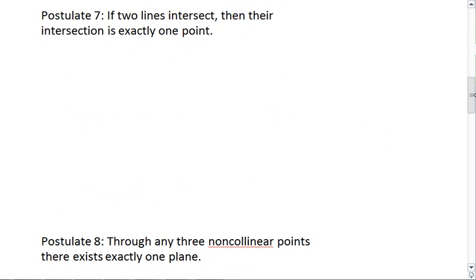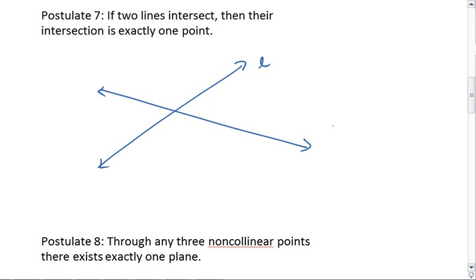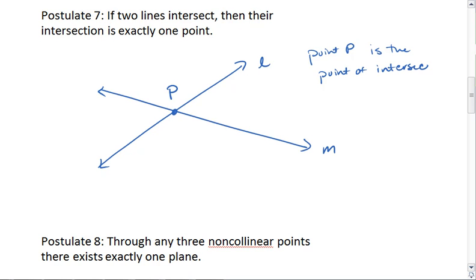In postulate 7, we are now looking at the intersection of two lines. If two lines intersect, then their intersection is exactly one point — lines will not intersect at multiple points. If lines intersect, then they intersect at one and only one point. So point P is the point of intersection for lines L and M.